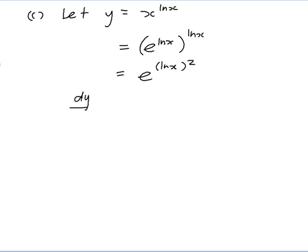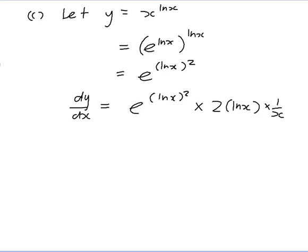Now I can use the chain rule to differentiate. dy/dx: if it were e to the x, the derivative would just be e to the x, but I have e to the (ln x) squared, so I keep that and multiply by the derivative of (ln x) squared. The derivative of (ln x) squared: if it were just x squared that'd be 2x, but I have ln x, so it's 2 ln x, and I multiply by the derivative of ln x, which is 1 on x. Putting it back: e to the (ln x) squared is x to the ln x, so the answer is x to the ln x times 2 ln x times 1 on x, and x to the ln x divided by x is x to the (ln x minus 1).